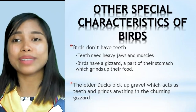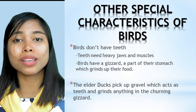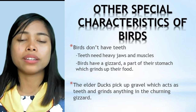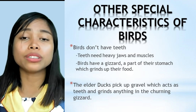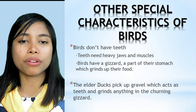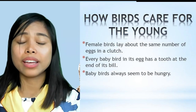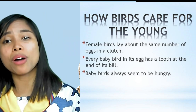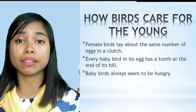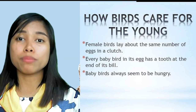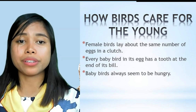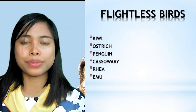Birds don't have teeth — teeth require heavy jaws and muscles — so birds use their gizzard, a part of their stomach which grinds up food. The eider duck picks up gravel which acts as teeth and grinds food in the churning gizzard. Female birds lay about the same number of eggs in a clutch. Every baby bird in its egg has a small tooth at the end of its bill. Baby birds always seem to be hungry, and the female bird feeds them beak to beak.